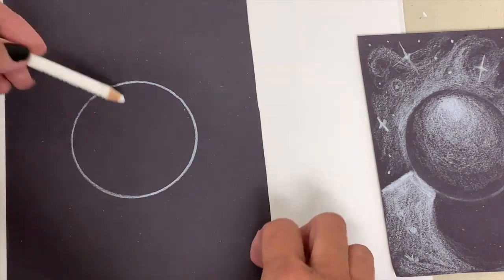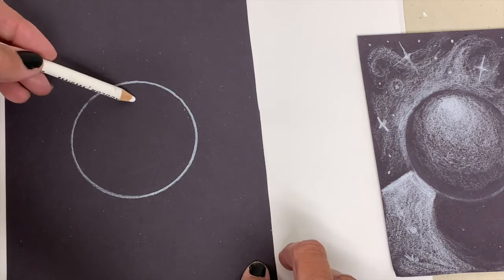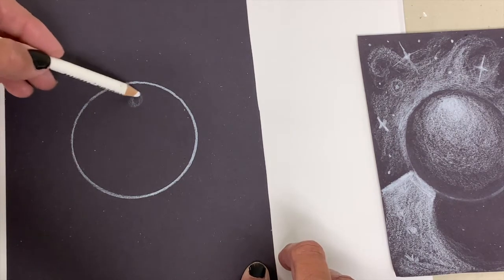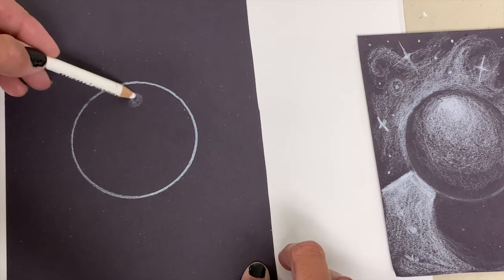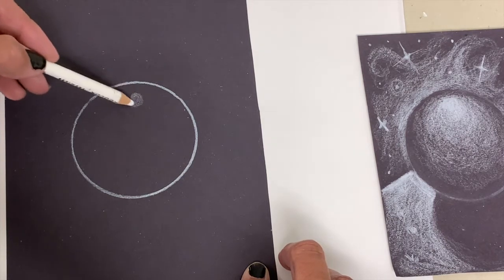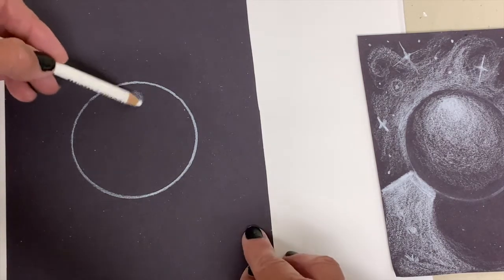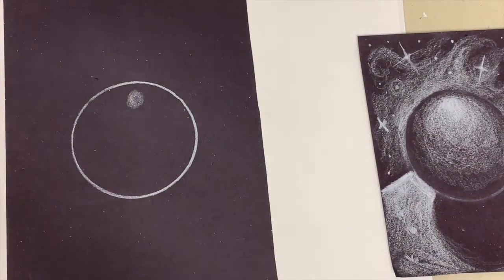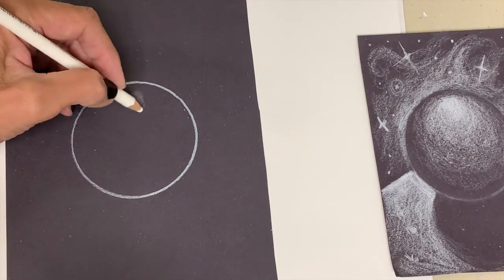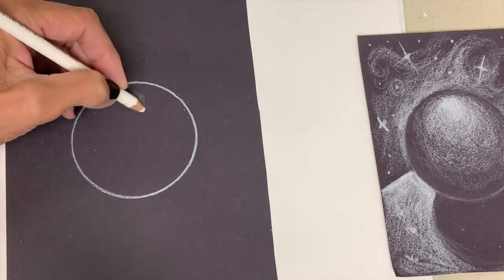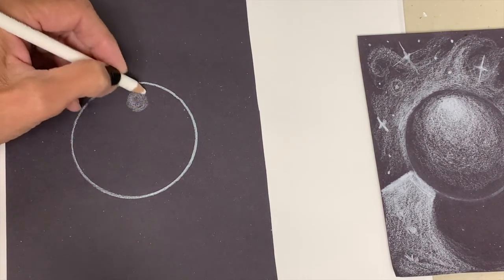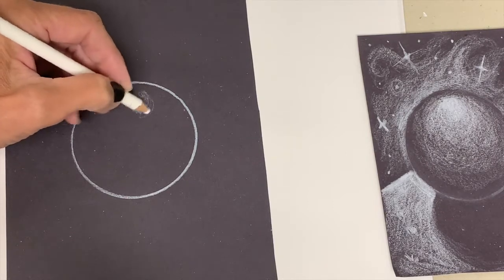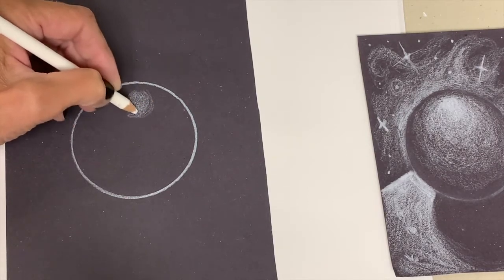Once I've determined where my highlight's going to be, I'm going to start coloring in with my colored pencil with circular motion. I want to try to draw it in the round, so I want to keep my shading, my highlighting, in more of a round circular motion as opposed to going straight across the object.